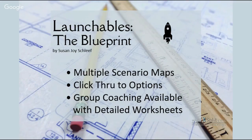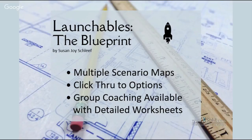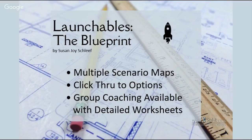This blueprint I've started working on is going to involve multiple scenario maps — that's just one we looked at involving a double opt-in. It's going to have click-through options for each of those boxes where you can get more details about how to set up each step. I'm also setting up a group coaching offer to help people who would like more help figuring out how to actually do each of those steps. That group coaching will involve detailed worksheets where you can keep track of what you're doing — for example, you're going to upload your lead magnet and need to keep track of the URL where you put it, so the worksheet gives you a place to organize all that information.